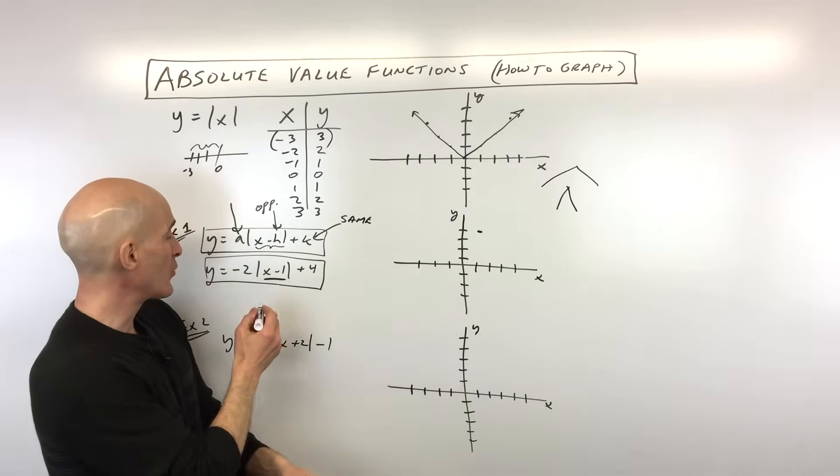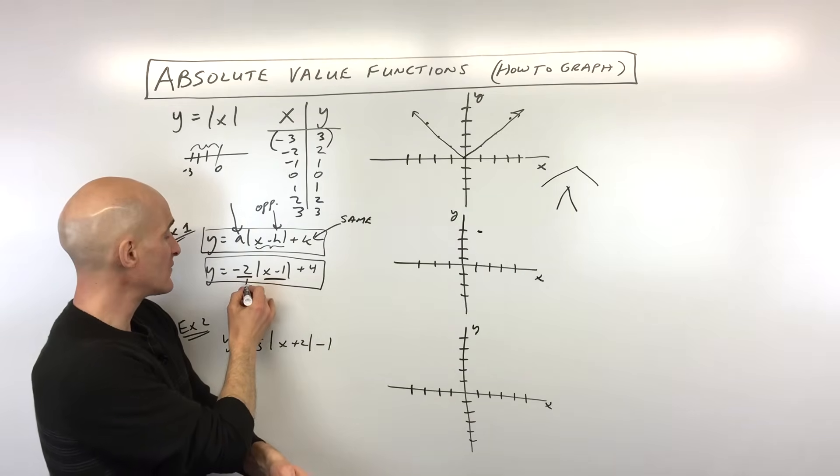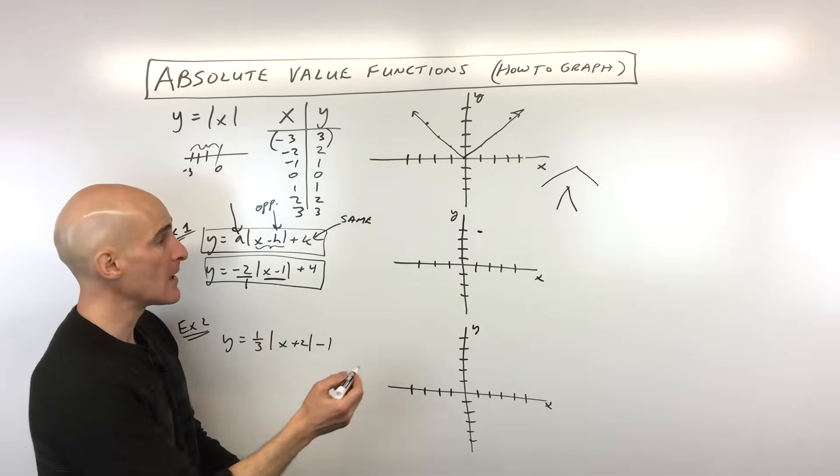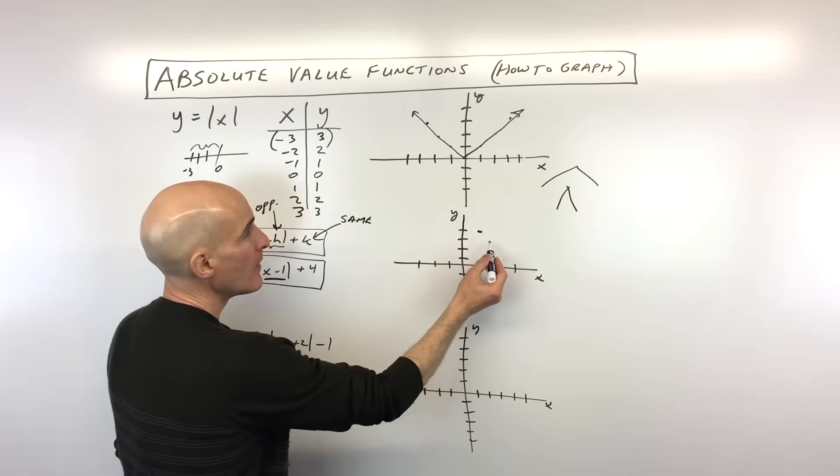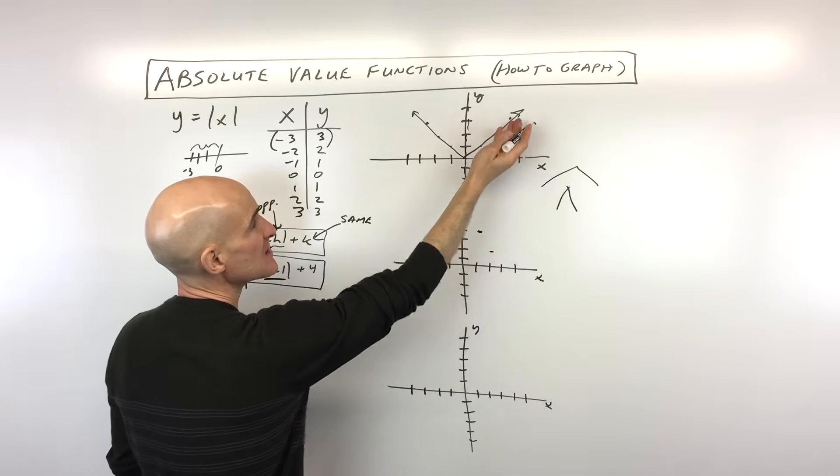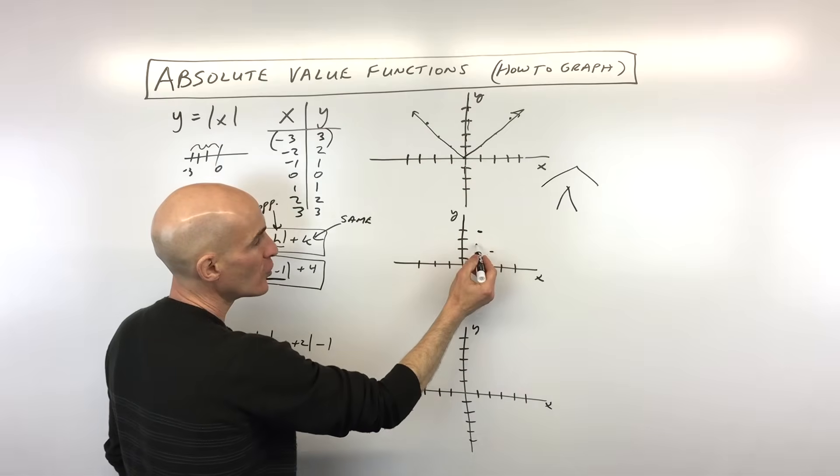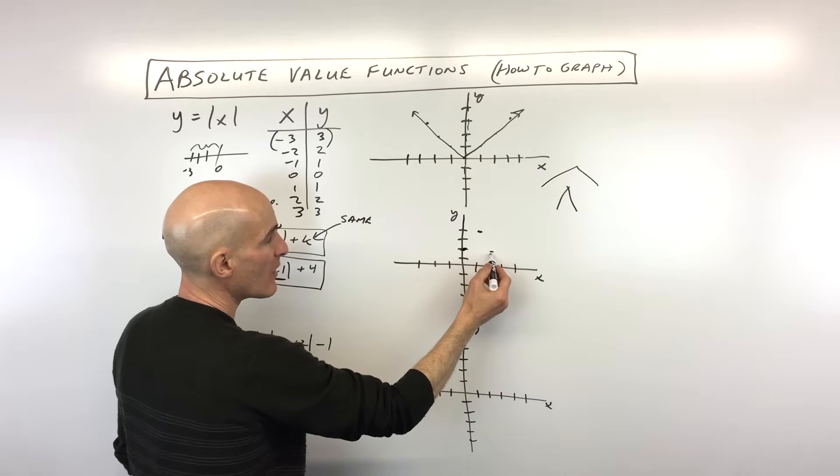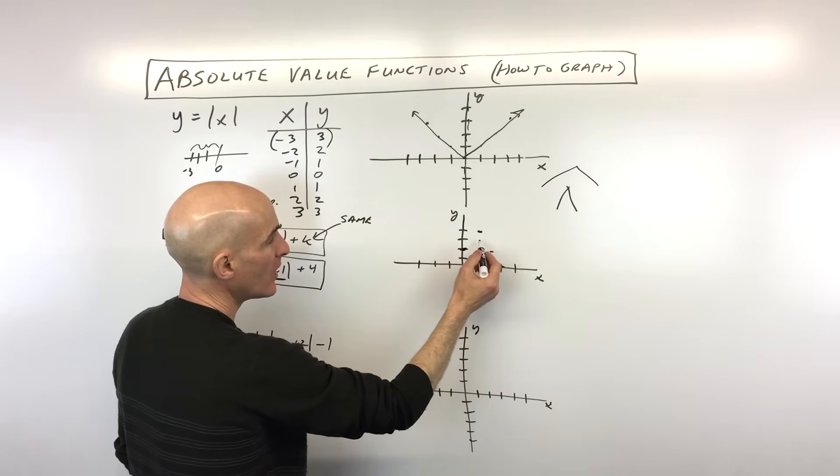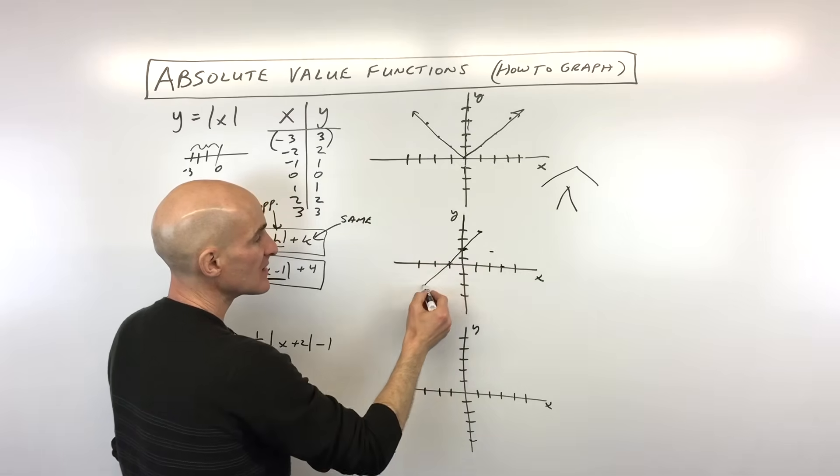But an easy way to graph these absolute value graphs is to think of this a value like the slope. So negative 2, we can think of that as a negative 2 over 1. So from this point, we're going to go down 2, right 1. But notice it's symmetric, meaning it's the same about both sides of that axis of symmetry, that vertex. So if we go down 2, right 1, we can also go down 2, left 1. And we can repeat that process down to right 1. And same thing over here, we can go down to left 1. And see, we're getting this nice V-shape.